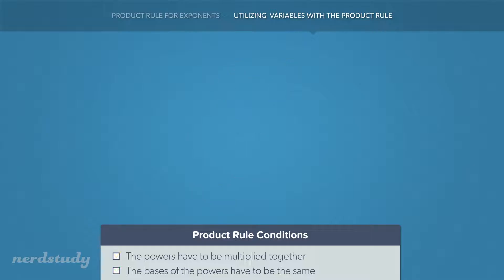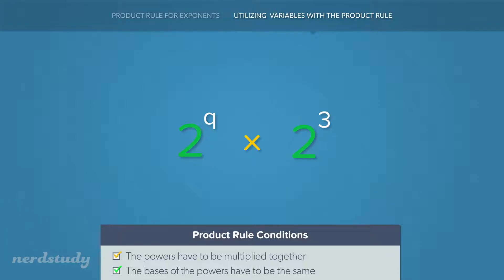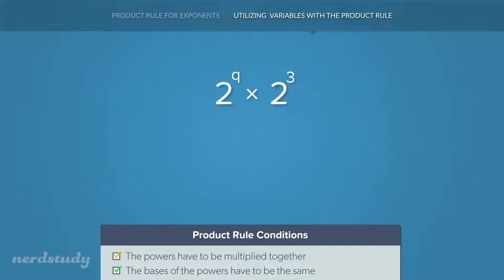Let's look at a few more examples. In this situation we have two powers being multiplied together, and we have both bases being the same, so nothing changes — all you have to do is add the exponents. What you get is 2 to the exponent q plus 3. Since we can't simplify q plus 3 any further, we can just leave it at that.